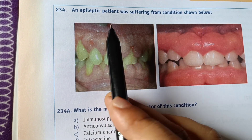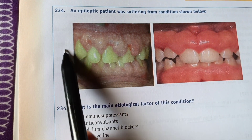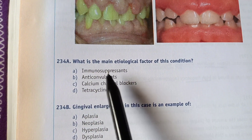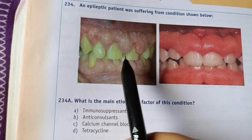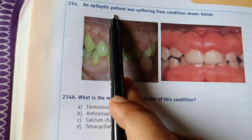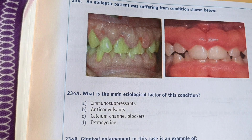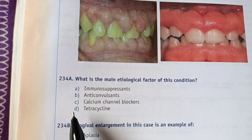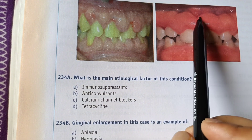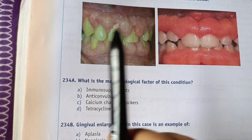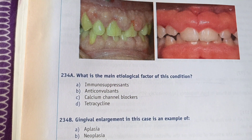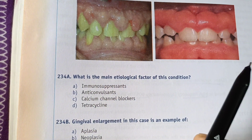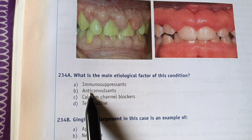Next question: an epileptic patient was suffering from the condition shown. What is the main etiological factor? Options are: A) immunosuppressant, B) anticonvulsant, C) calcium channel blocker, D) tetracycline. This is a condition of gingival hyperplasia. Since the patient has an epileptic problem, they are already on anticonvulsant or antiepileptic drugs. So the right answer is option B — anticonvulsant.